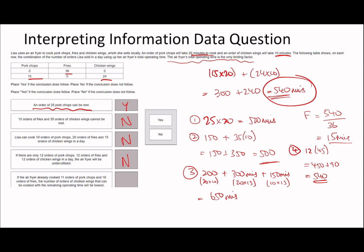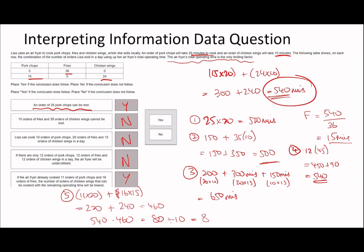Sub-question 5: if the airfryer has already cooked 11 orders of pork chops and 16 orders of fries, how many chicken wings can be made in the remaining time? 11 times 20 is 220, plus 16 times 15 is 240, totalling 460. So 540 minus 460 leaves 80 minutes for chicken wings. Each order takes 10 minutes, so you can only make 8 orders of chicken wings.